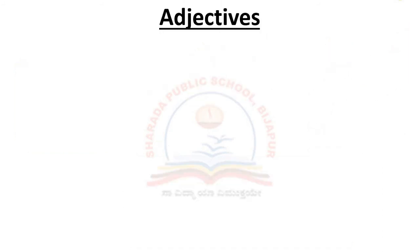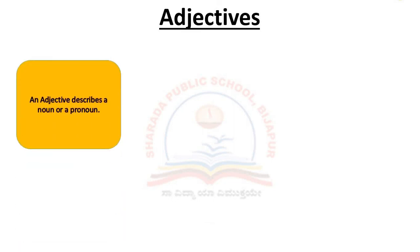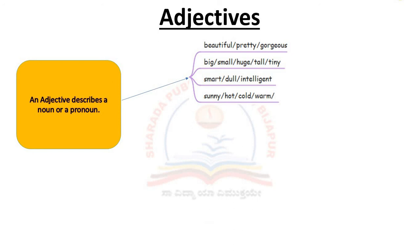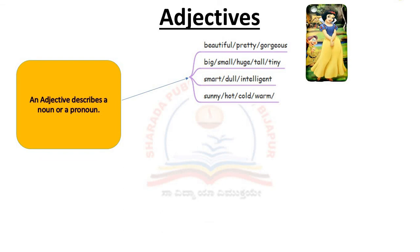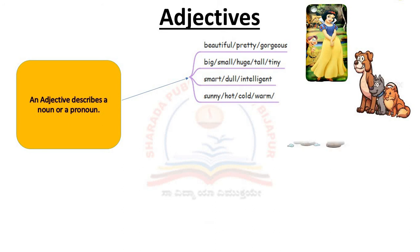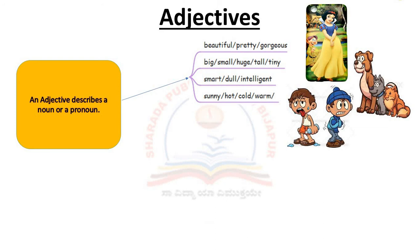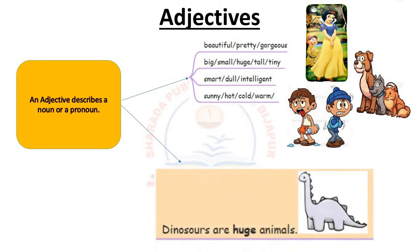Let's move to the next part of speech: adjectives. An adjective describes a noun or a pronoun. Let's look at words that play the role of an adjective: beautiful, pretty, gorgeous, big, small, huge, tall, tiny, smart, intelligent, sunny, hot, cold, warm. These words specify the quality or quantity in a sentence when used along with a noun or a pronoun. For example: Dinosaurs are huge animals. Here, huge describes the kind of animals dinosaurs are. That's all for today, children. Thank you.